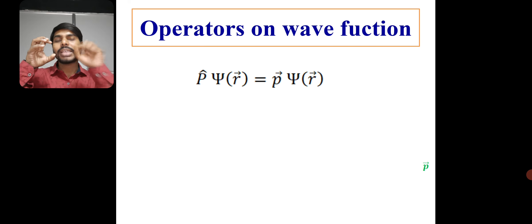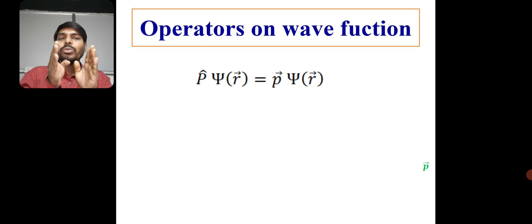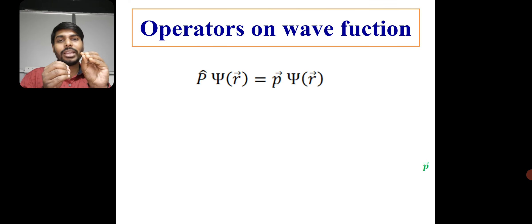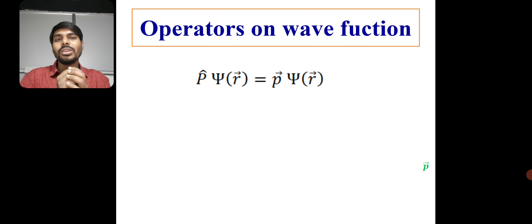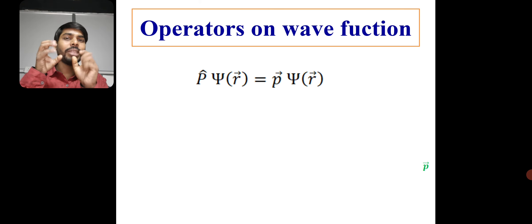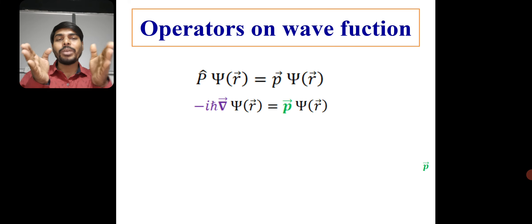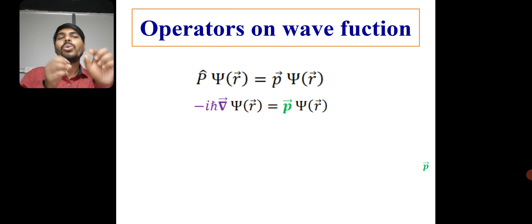The momentum operator is acting on the wave function psi. We know that psi is the state function of the particle — inside psi, everything is contained: momentum, energy, position. We can think of it as a bag containing many different things. So when we apply the proper operator — here the momentum operator — we extract the momentum. The momentum operator is minus i h-bar nabla, and when it acts on psi, we get the momentum of the particle.